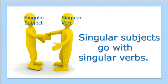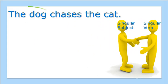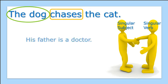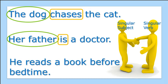Singular subjects go with singular verbs. Let's look at some examples. 'The dog chases the cat' — 'the dog' is the singular subject and 'chases' is the singular verb, so the sentence is correct. 'His father is a doctor' — 'his father' is a singular subject and uses a singular verb. 'He reads a book before bedtime' — 'he' is a singular subject and 'reads' is a singular verb.